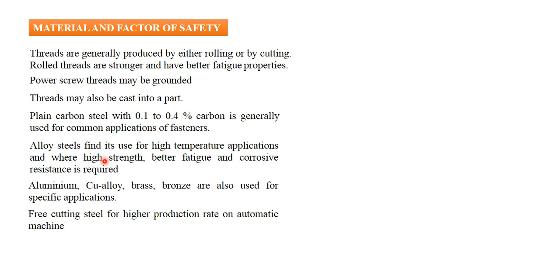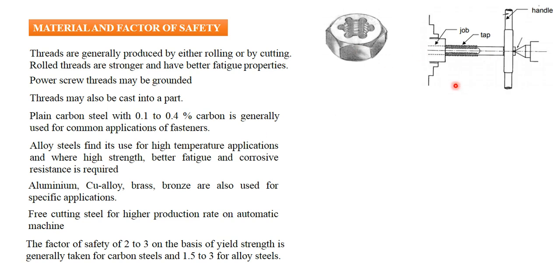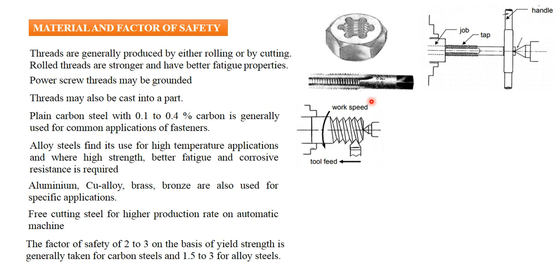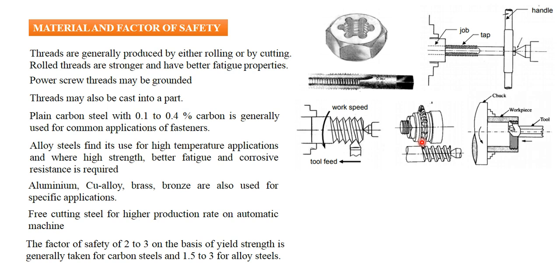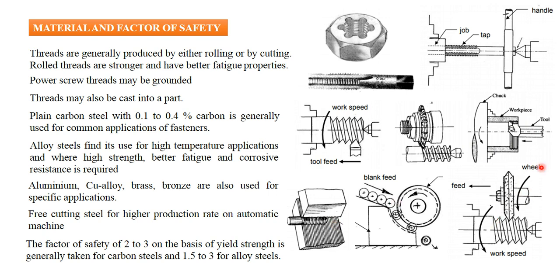Copper and aluminium are used for special purposes. Free-cutting steel with slightly higher sulfur content is used for higher production rates on automatic machines. The factor of safety is 2 to 3 based on yield strength, and 1.5 to 3 for alloy steel. Threads can be manufactured manually using a handle and tap, by single-point cutting tool on a lathe, by milling, or by rolling. Internal threads can also be made using a single-point cutting tool, and grinding is used for precision threads including multi-start threads.